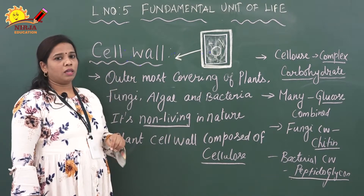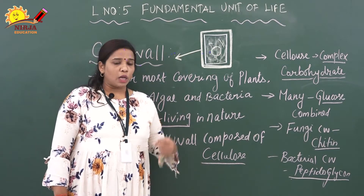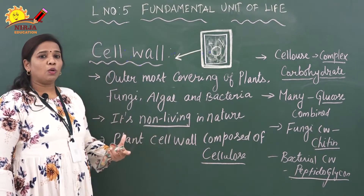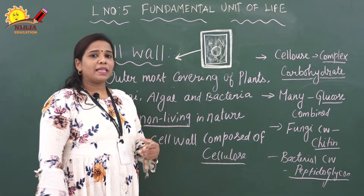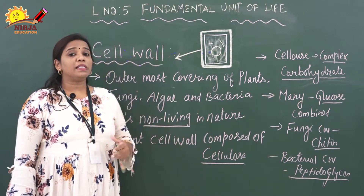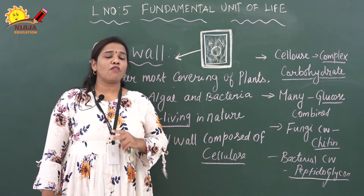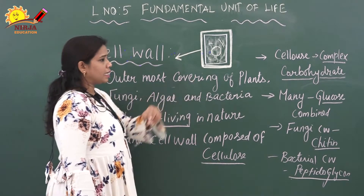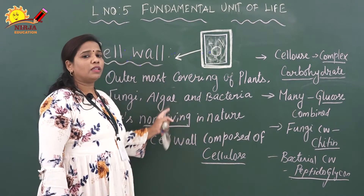What is meant by cell wall and where is it present? The cell wall is the outermost covering of the plant cell and is composed of cellulose. Animal cells do not have a cell wall — the cell membrane is the outermost covering of animal cells. Plant cells have the cell wall as the outermost covering. Fungi, algae, and bacteria also have a cell wall.